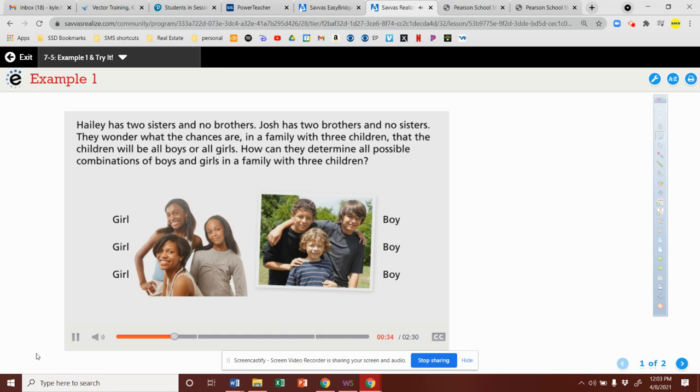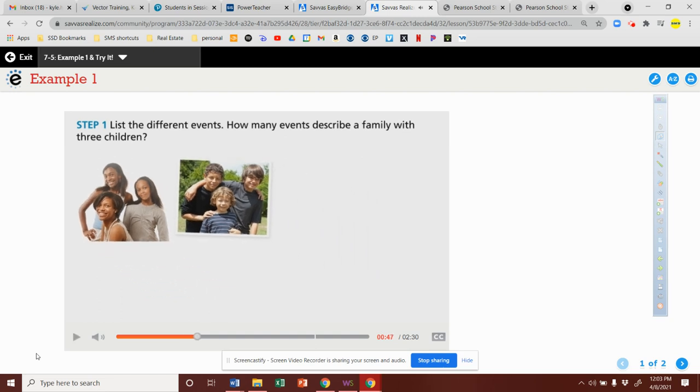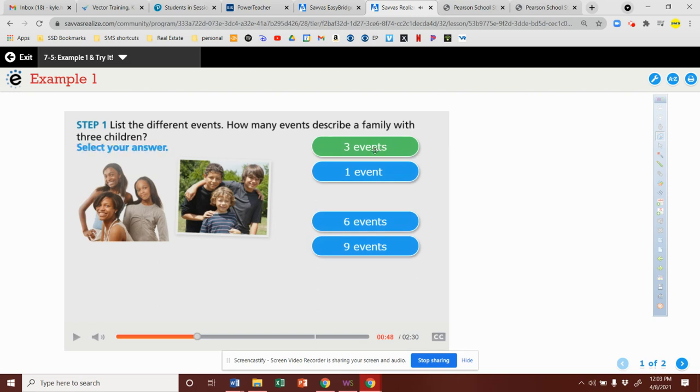How can they determine all possible combinations of boys and girls in a family with three children? The first step is to list the different events. How many events describe a family with three children? Select your answer.